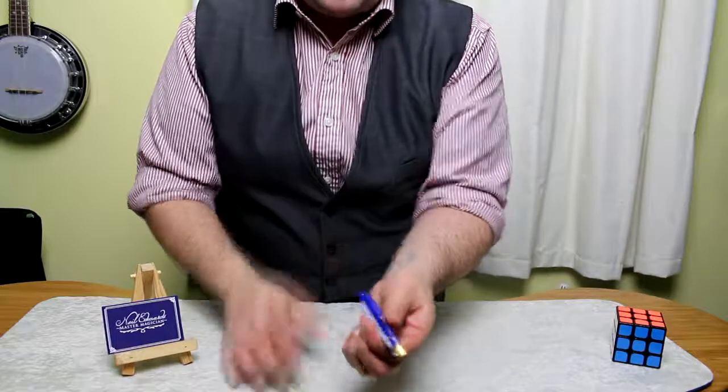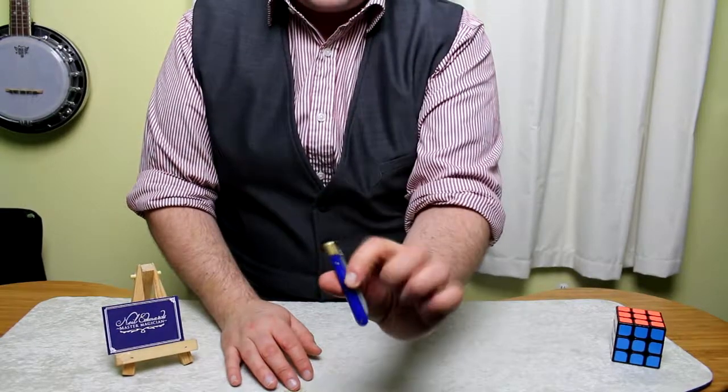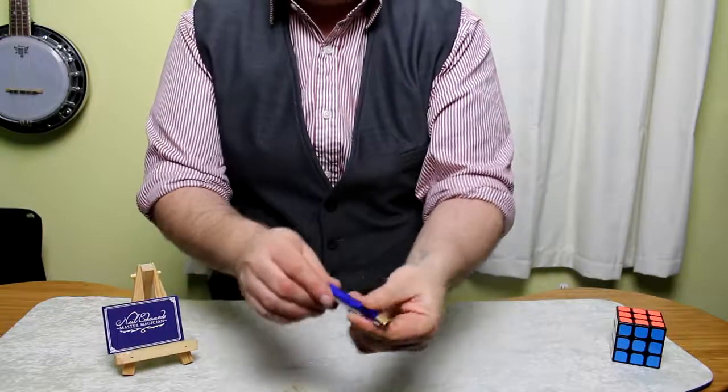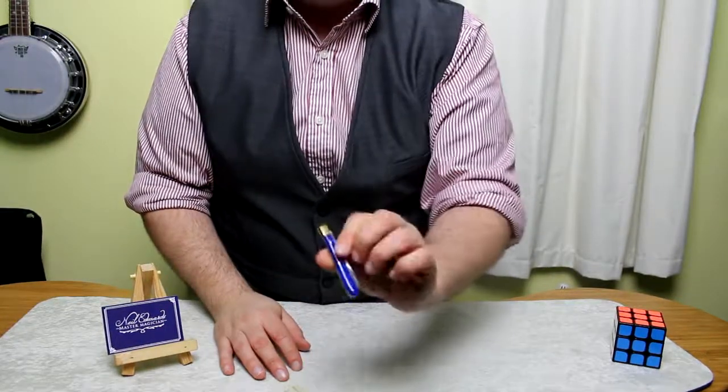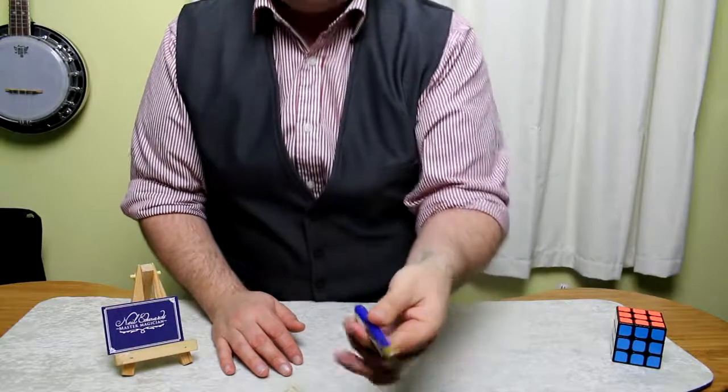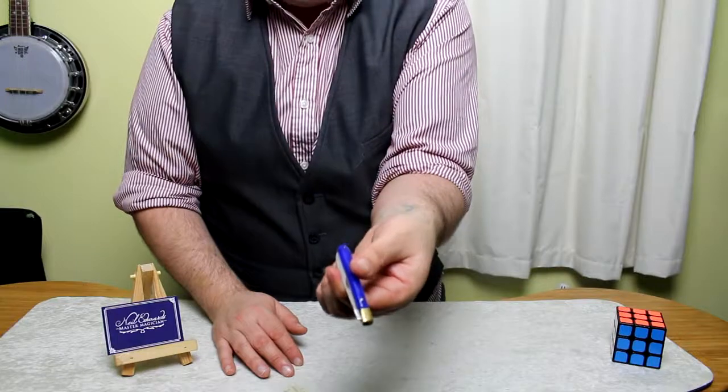Now, blue would have been particularly hard to get hold of in Victorian England only because blue handles don't appear in nature very much. It's only with the advent of plastics that we get blue. So if you had a blue pen knife, you would be seen as quite well-to-do.